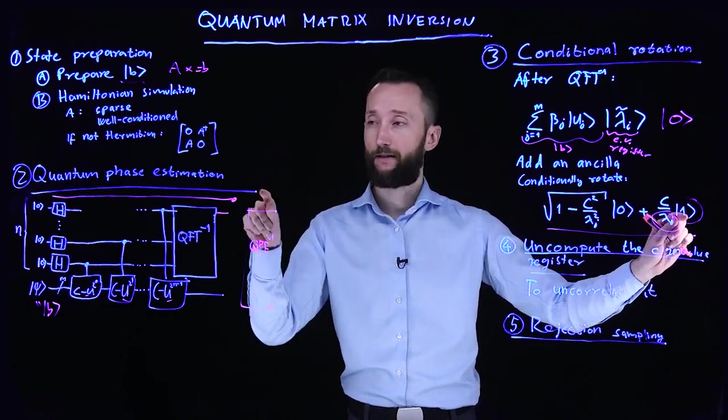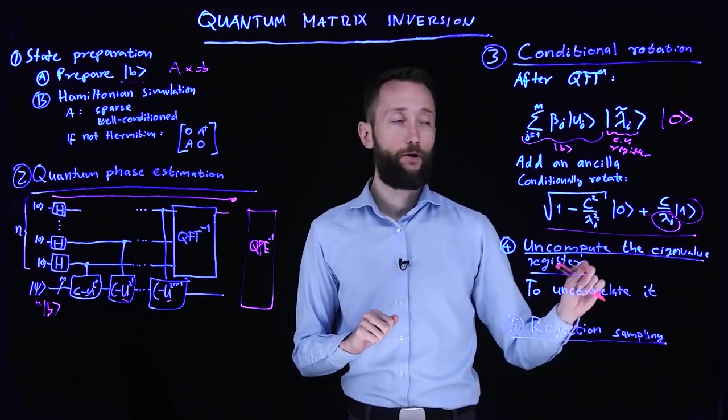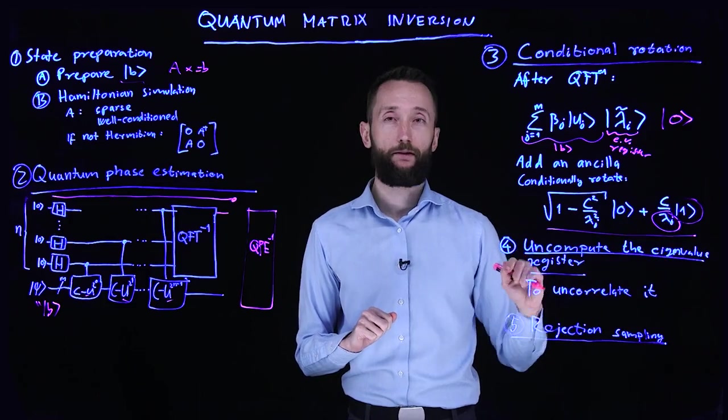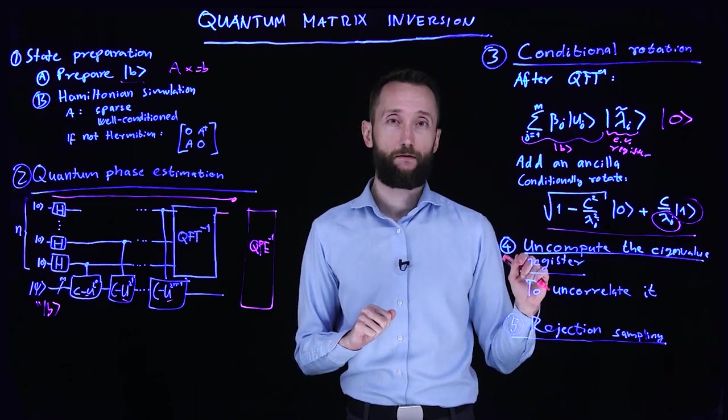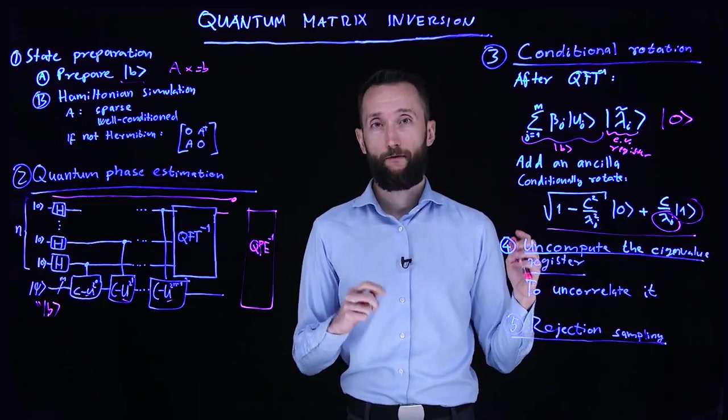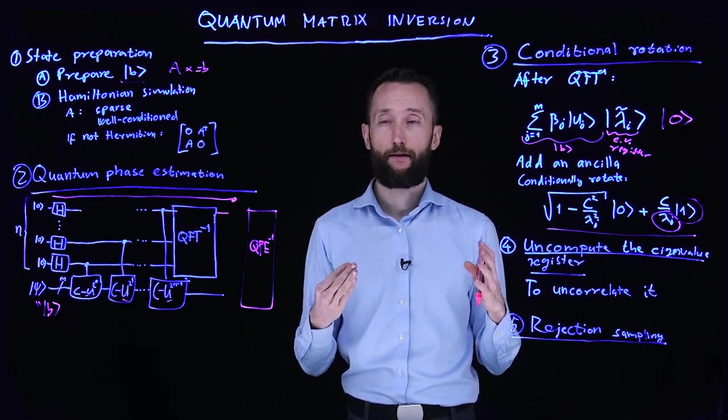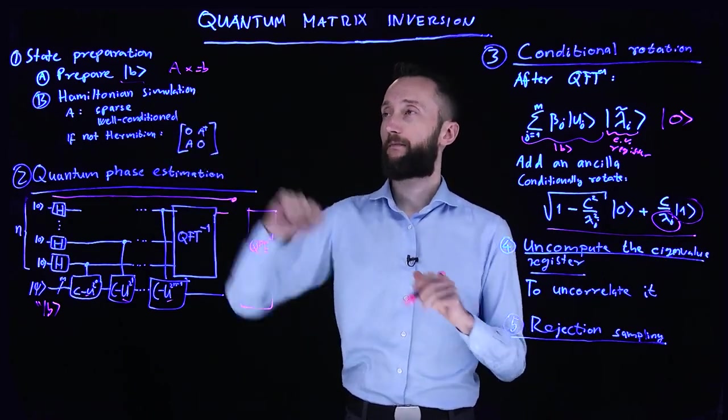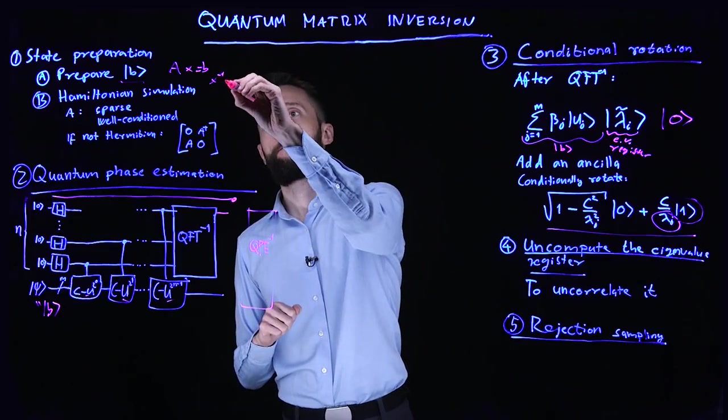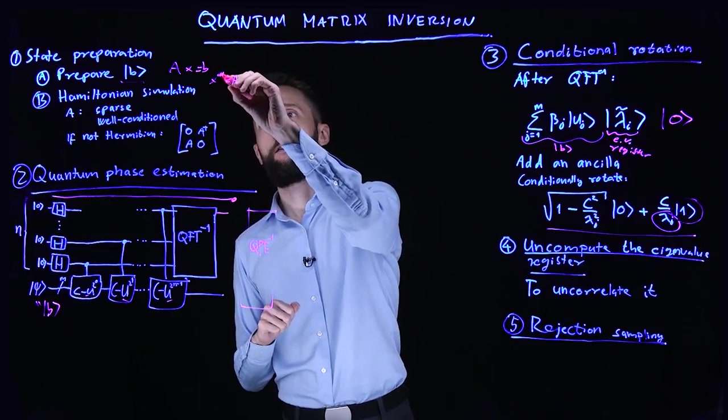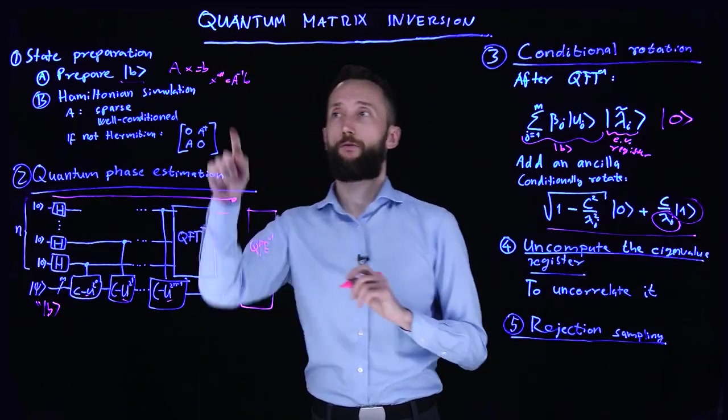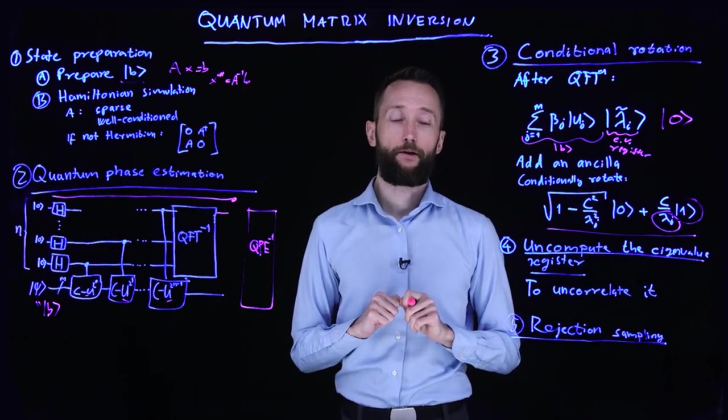So once we measure the ancilla register and we get one, we know that the probability of that is proportional to the inverse of lambda i. And with that, we can start estimating observables in the solution of this linear equation.